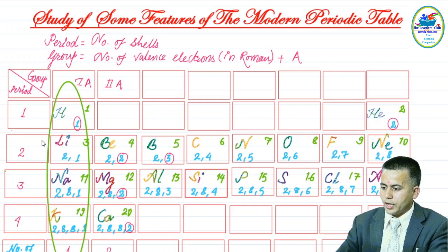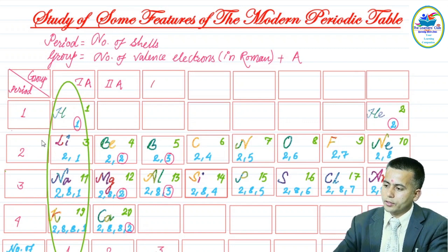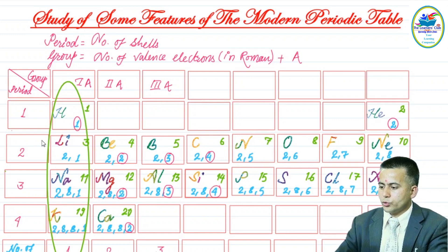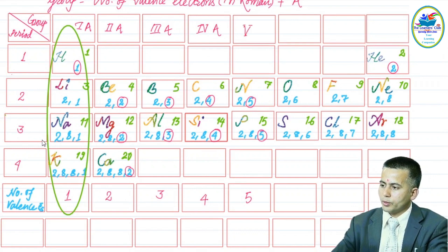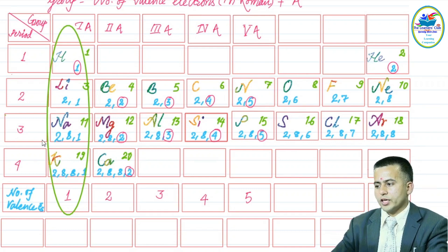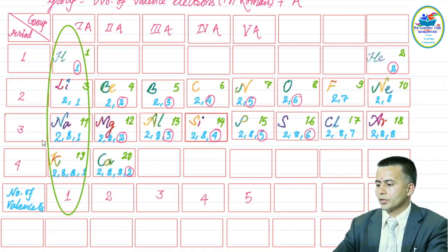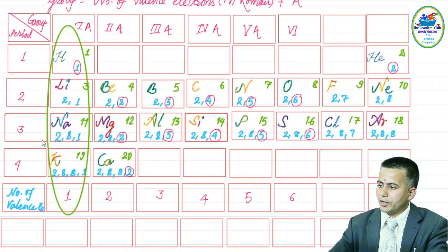For boron and aluminium, there are three valence electrons, so their group number is IIIA. Carbon and silicon have four valence electrons, so they belong to Group IVA. Nitrogen and phosphorus have five valence electrons, giving them Group VA. Oxygen and sulfur have six valence electrons, so their group is VIA.